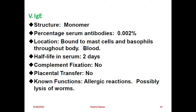IgE has a monomer structure and is present in very small quantities in the body - only 0.002% of serum antibodies. It is usually bound to mast cells and basophils throughout the body. Half-life is very short at 2 days. Placental transfer is no; complement fixation is no. IgE is very useful in allergic reactions and possibly in the lysis of worms.